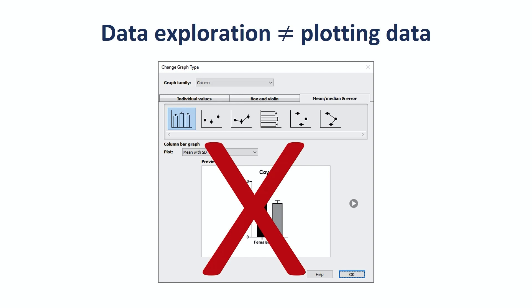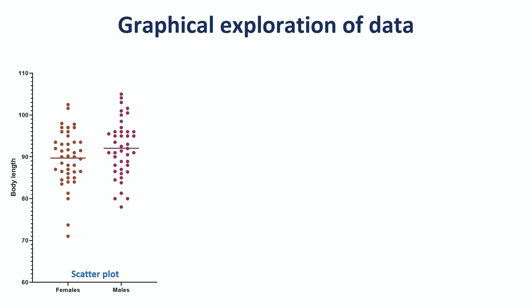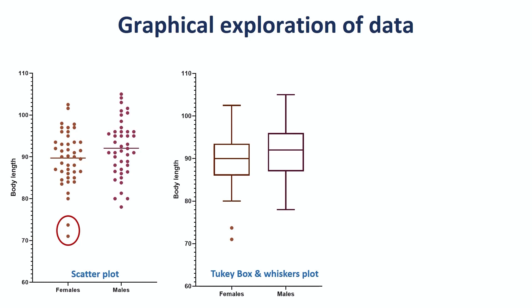One cool way to have a first look at our data is a scatter plot. It shows all the data at once, and if we add the mean, we have a good visual reference to check out central tendency or symmetry, hence normality. Looking closer at the females' data, we notice that two values seem quite away from the rest — these could be outliers. One way to check this out is to plot data as a box and whiskers plot, the Tukey version. John Tukey designed the box and whiskers plot, and we can see that these two values are official outliers, as in they don't belong.